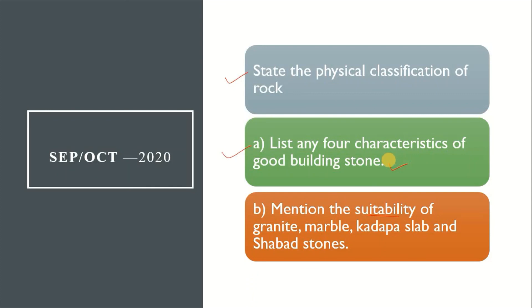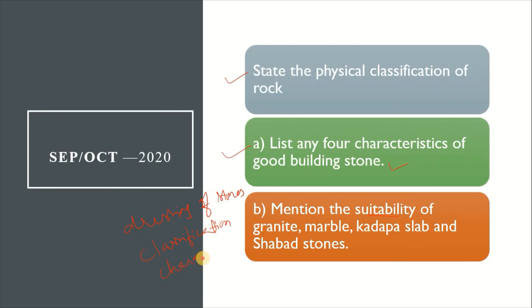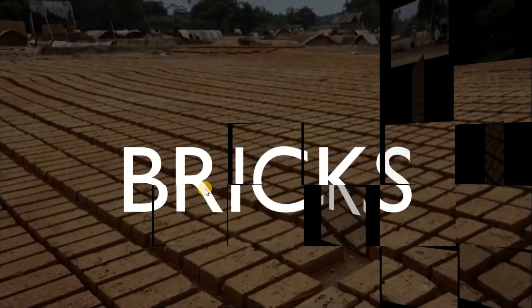These are the important questions from the stones chapter. The four key topics to concentrate on are: dressing of stones, classification of stones, characteristics of stones, and common varieties of stones. Focusing on these four topics will get you 13 marks. In the next class we will discuss bricks.